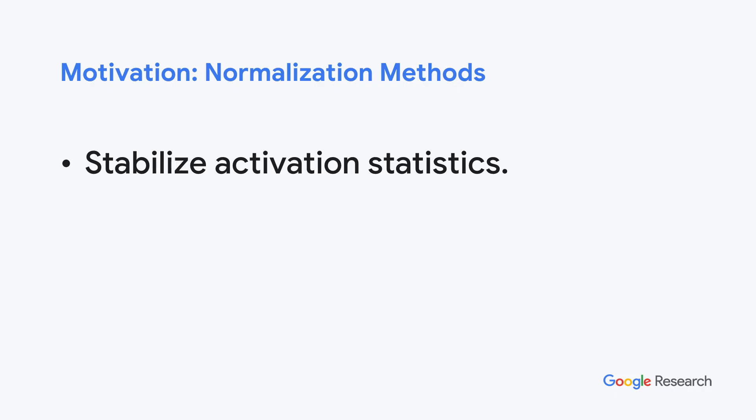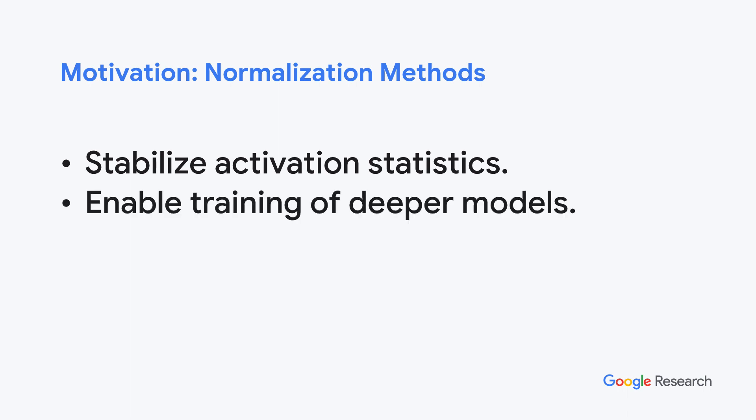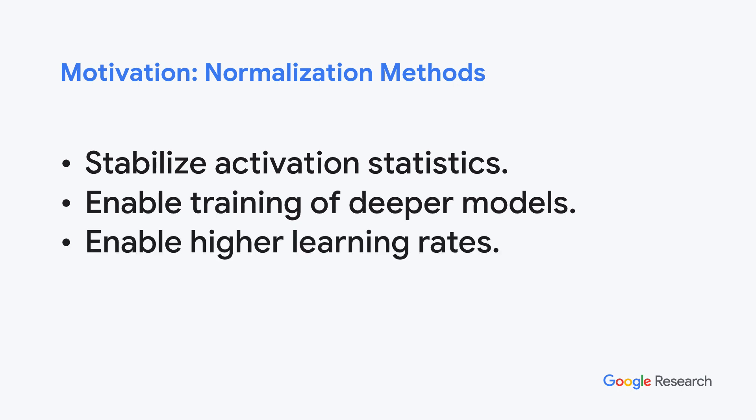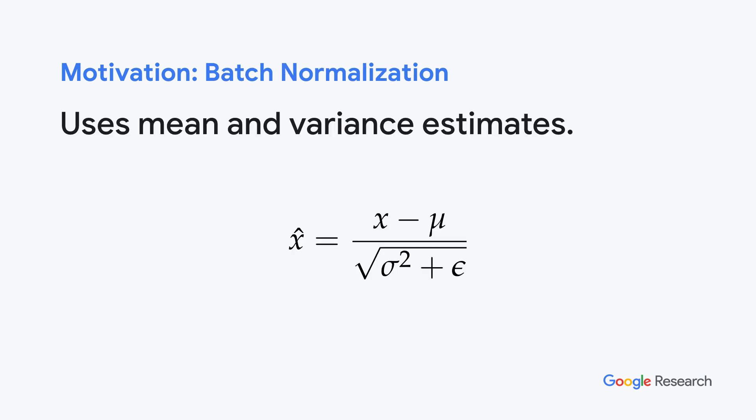Normalization methods improve training by stabilizing activations in a model. This leads to a better conditioned optimization problem, enabling reliable training of deeper and more powerful models, as well as training with higher learning rates resulting in faster training. Let's take a closer look at key aspects of batch normalization.